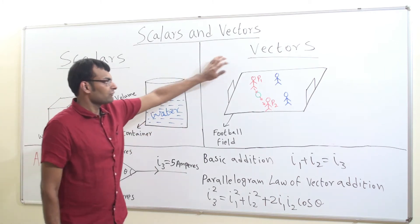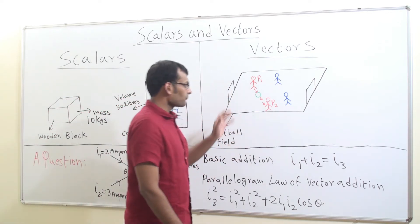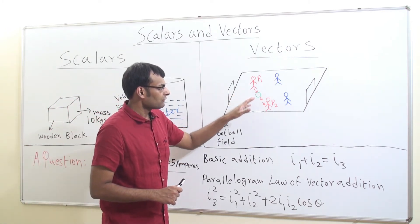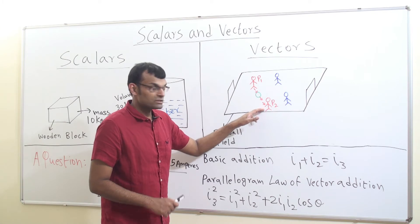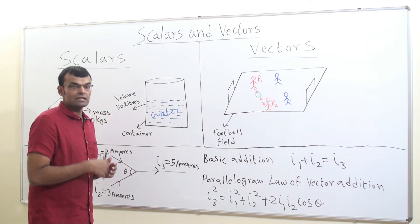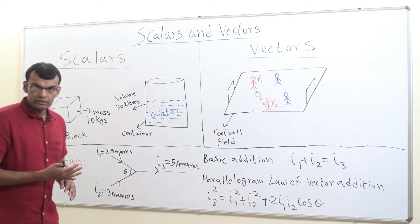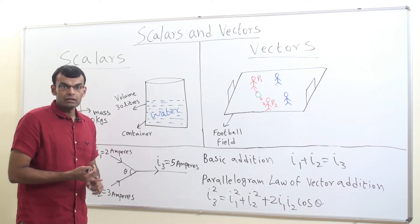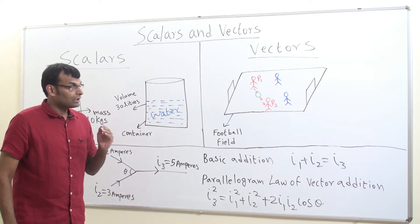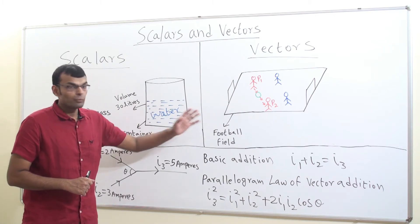Now, what is the difference between vectors and scalars? Let's look at an example of a football field where players are playing football. A person kicks a ball with a force towards P2. The definition of a vector states that a physical quantity described using magnitude and direction, and if it obeys the law of parallelogram of addition, is called a vector.